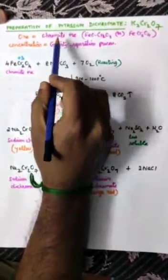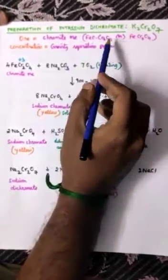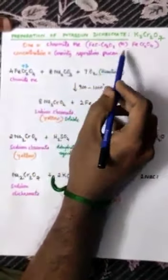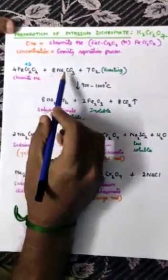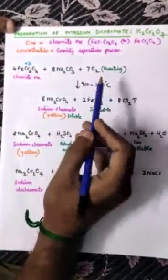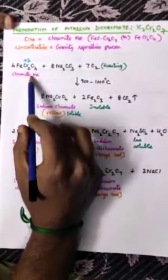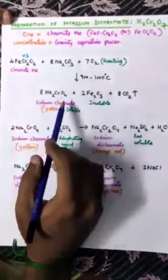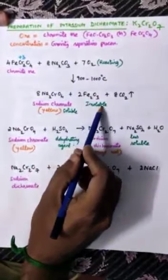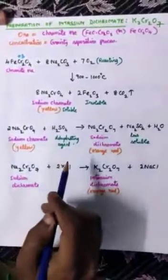The formula for chromite ore is FeO·Cr2O3 or FeCr2O4. It is an oxide ore, so it can be concentrated by gravity separation, also called hydraulic washing. To prepare potassium dichromate, chromite ore FeCr2O4 is fused with sodium carbonate and roasted — meaning heated in excess of oxygen below the melting point — at 900 to 1000 degrees Celsius.